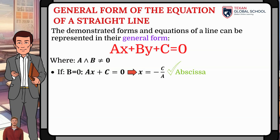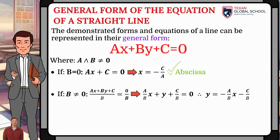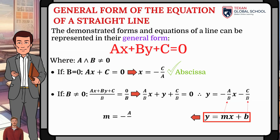Now if b is different from zero, we can divide both sides of the equation by b. Then we obtain (a/b)x + y + c/b = 0. Remembering the equation of a line given its slope and intercept, y = mx + b, we can adapt the equation to this form and see that the slope m is equal to negative a over b, and the y-intercept b is negative c over b.